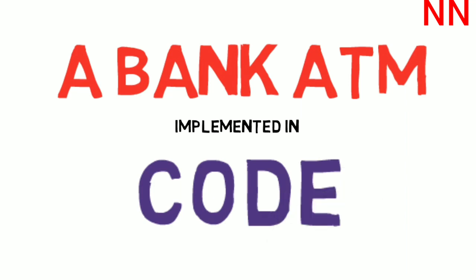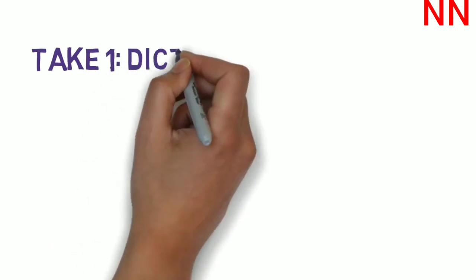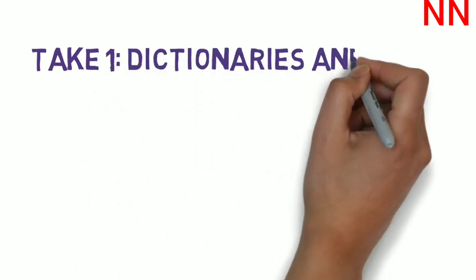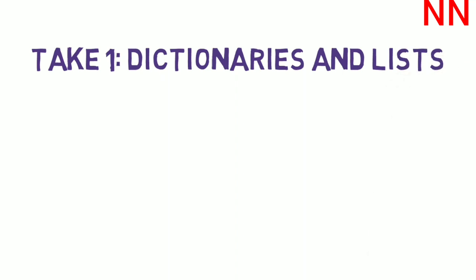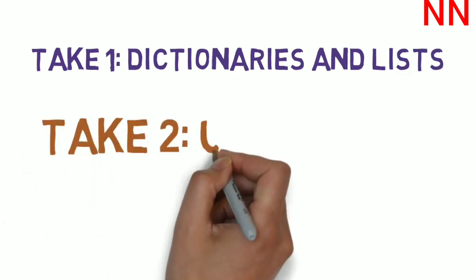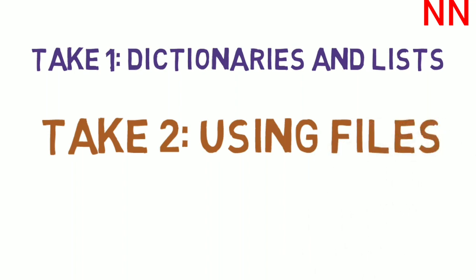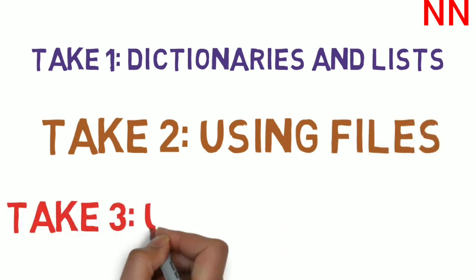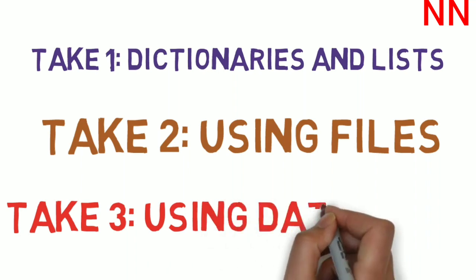The basic thing here is that you need to store information. Store information about bank accounts, about the balance in the bank accounts, how much is being withdrawn and how much is being deposited. And you can do this using a variety of different options. You could store that information in different ways. The first way is to use dictionaries and lists or you could use files or databases. Let's cycle through each of these options and see which one works.